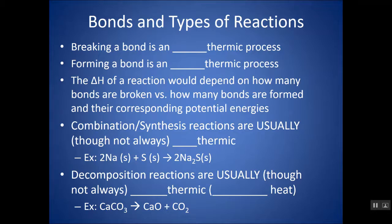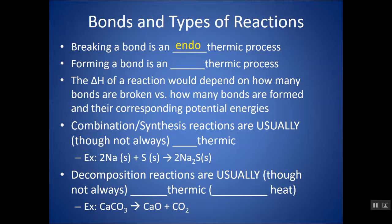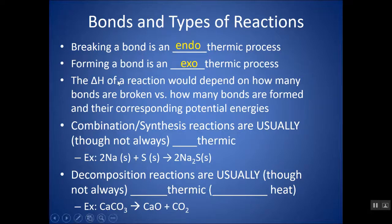Let's review which processes are endothermic and which are exothermic. Breaking a bond is always endothermic — it takes energy. Bonds actually hold less potential energy than separated atoms; they are more stable. Forming a bond is exothermic — it releases energy and becomes more stable. The overall delta H depends on how many bonds are broken versus formed. More or stronger bonds formed → exothermic; more or stronger bonds broken → endothermic.